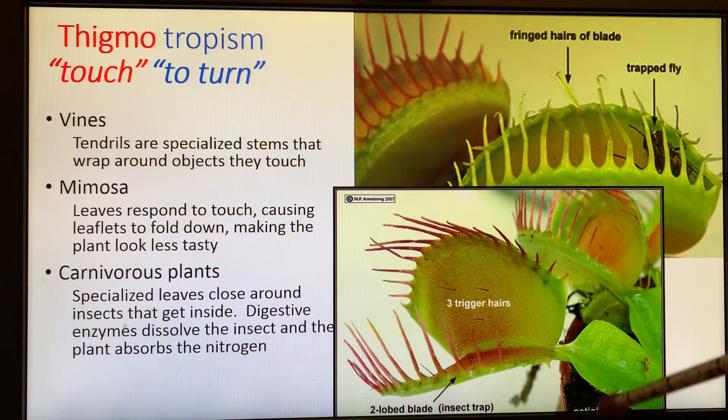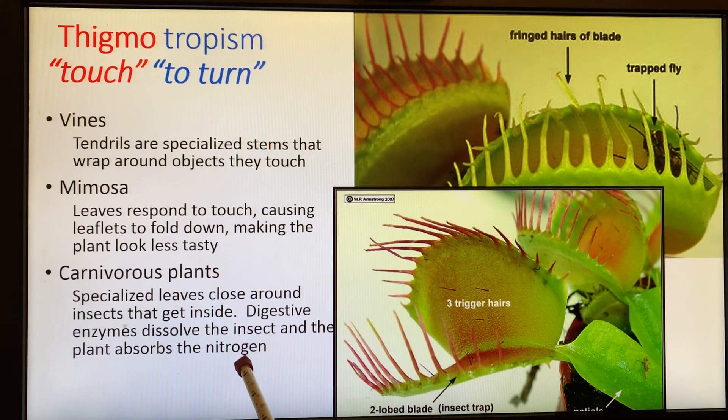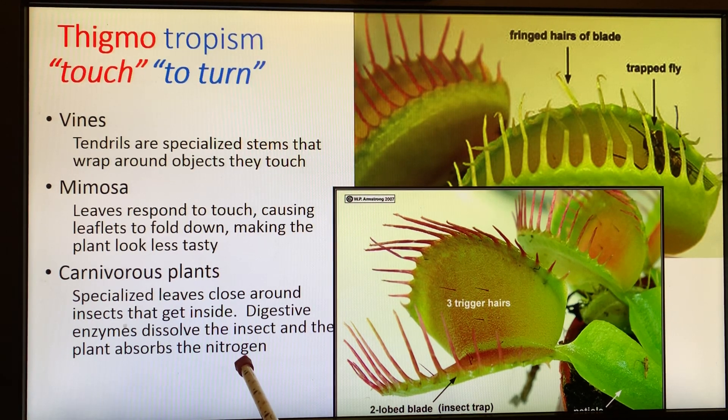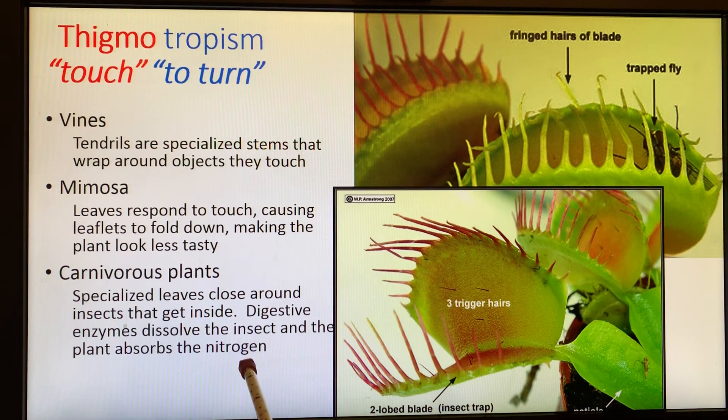Then it produces some digestive enzymes and dissolves that poor little unsuspecting insect. But the reason why is not to get calories or energy from the insect, but to get nitrogen. The nutrient that plants normally get from the soil, they have found an adaptation to be able to suck it out of insects that they capture. They're pretty fascinating.